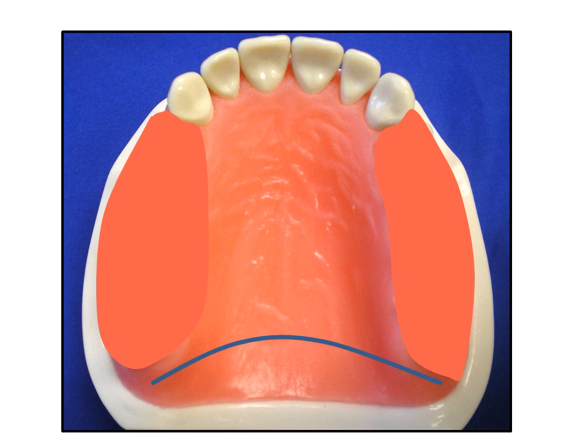Initially, the path of insertion will be established with short guiding planes formed on the distal of the canines, and vertical support for the partial denture will rely on canine rest seats and support from the hard palate. Several options are available for rest seats for the maxillary canine, but in this case we will utilize mesial ball rests.